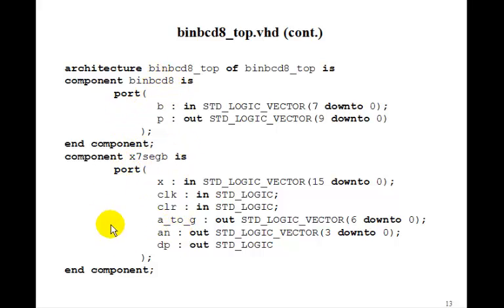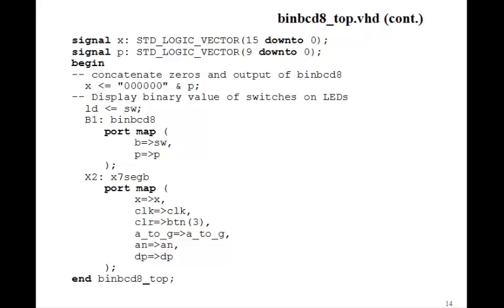And then after the word begin, we have these two signals, X(15 down to 0) and P(9 down to 0). We'll concatenate these six 0's in front of P for X. The switches go to the LEDs. And then we just port map the binary BCD. The B gets connected to the switches. P goes to the signal P.